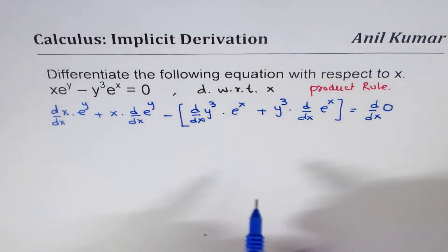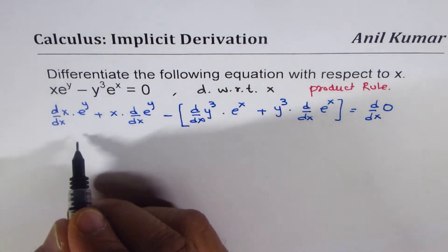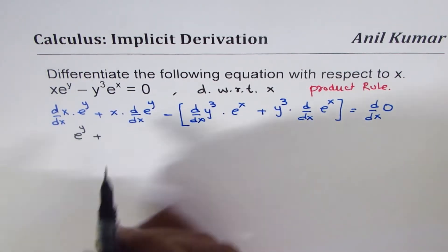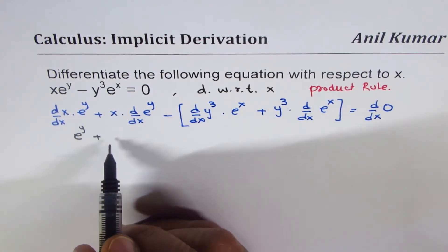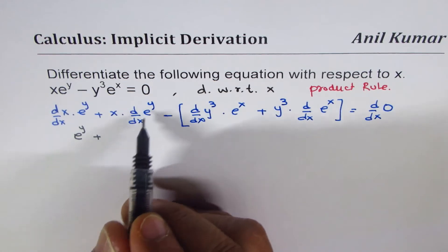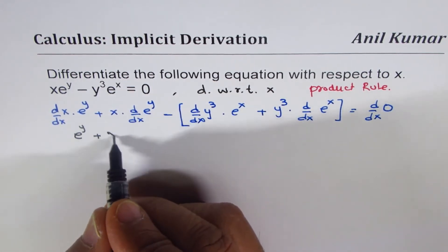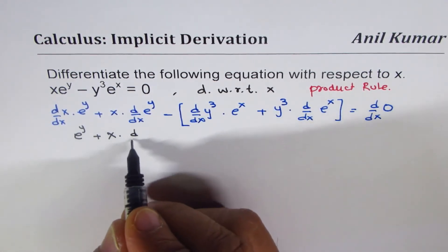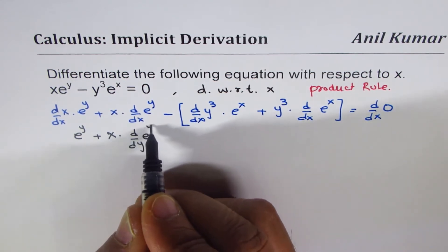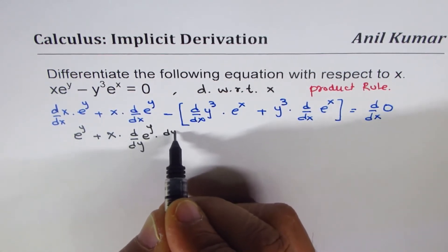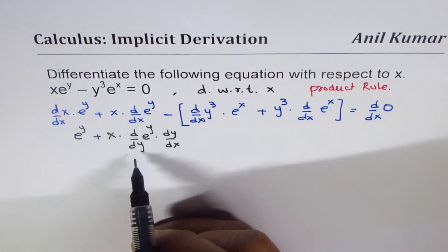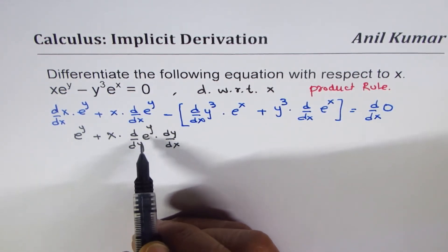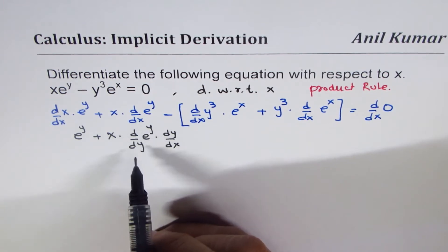Derivative of x is 1, so what we get here is e to the power of y. So we get e to the power of y plus x times derivative of e to the power of y. Now we need to use chain rule here to get x times d/dy of e to the power of y times dy/dx. So we will apply the chain rule to find the derivative of e to the power of y with respect to y.